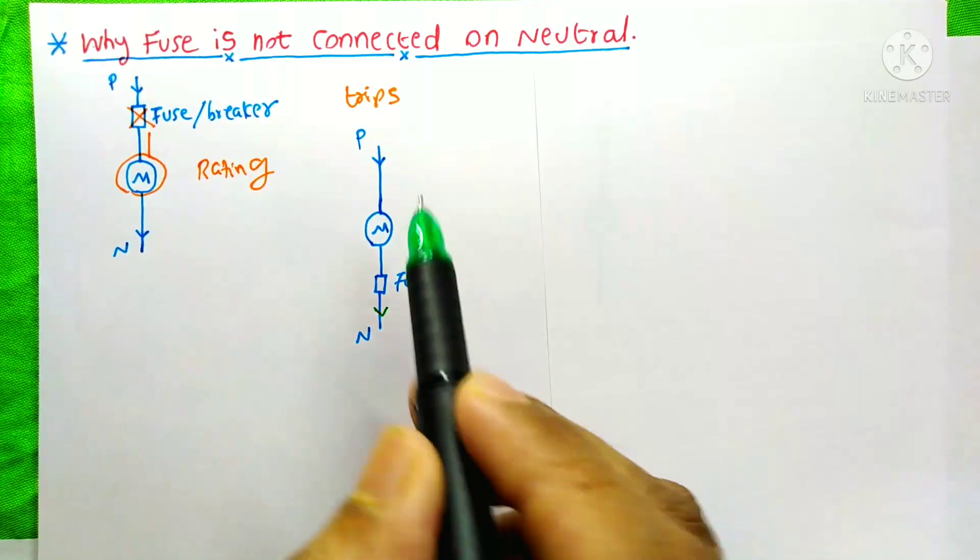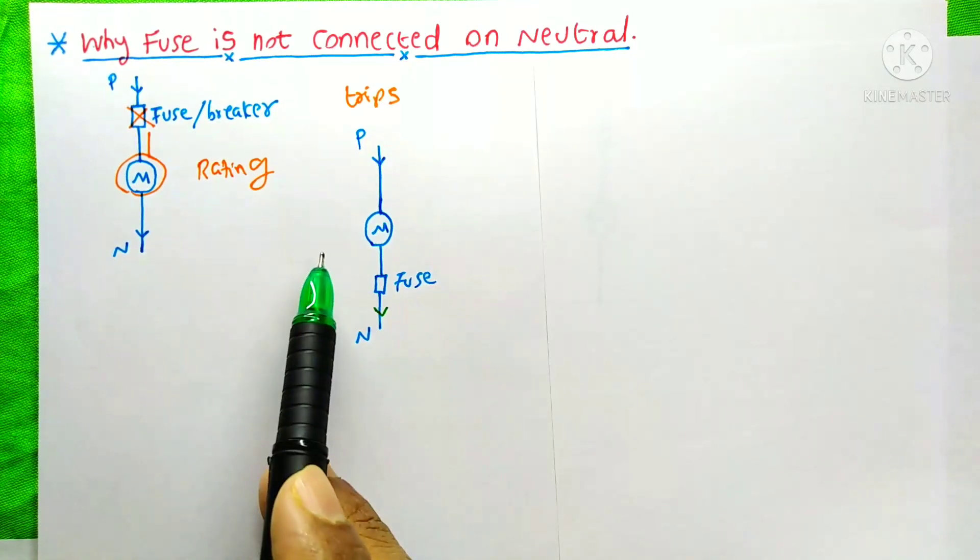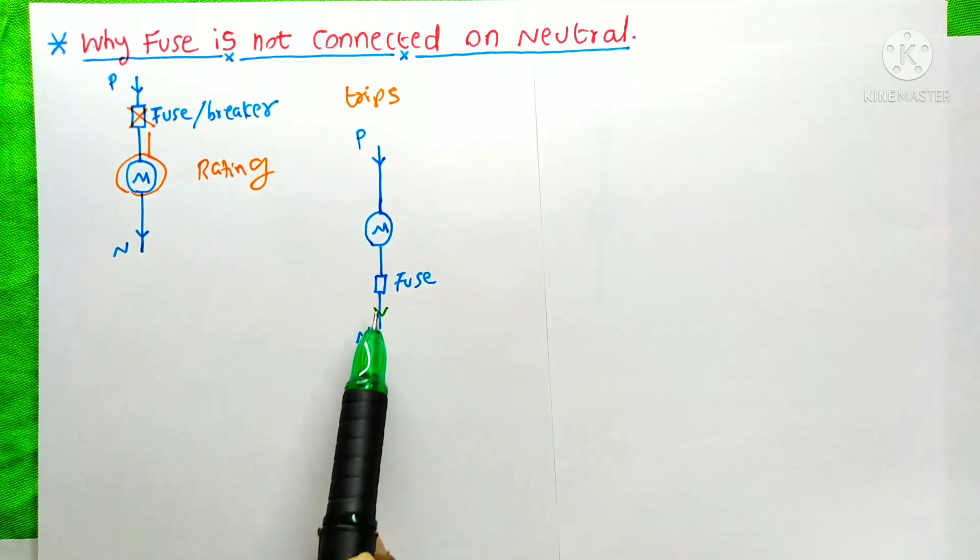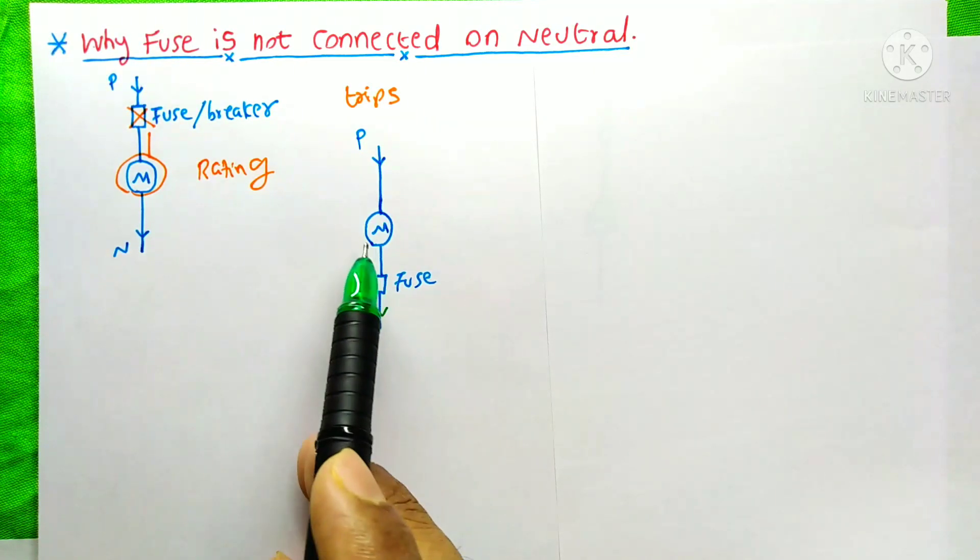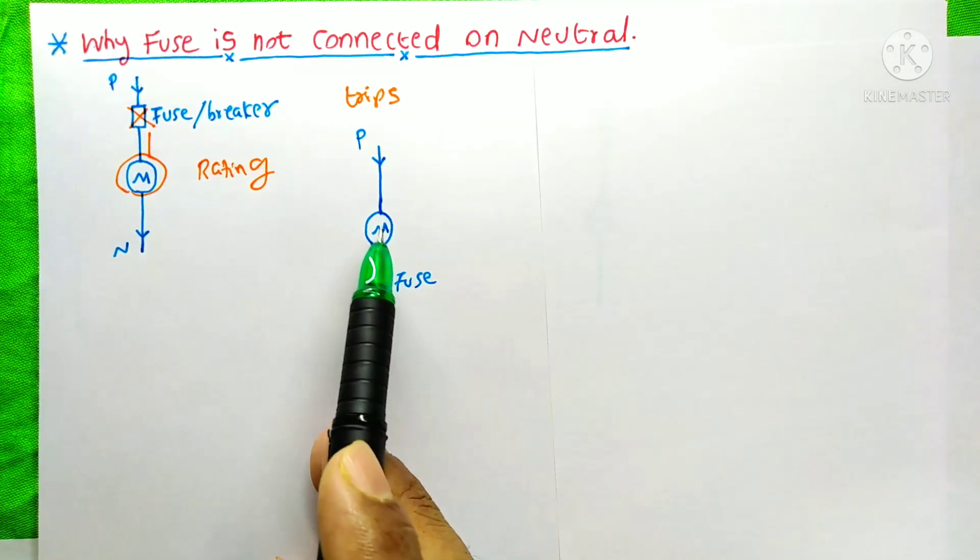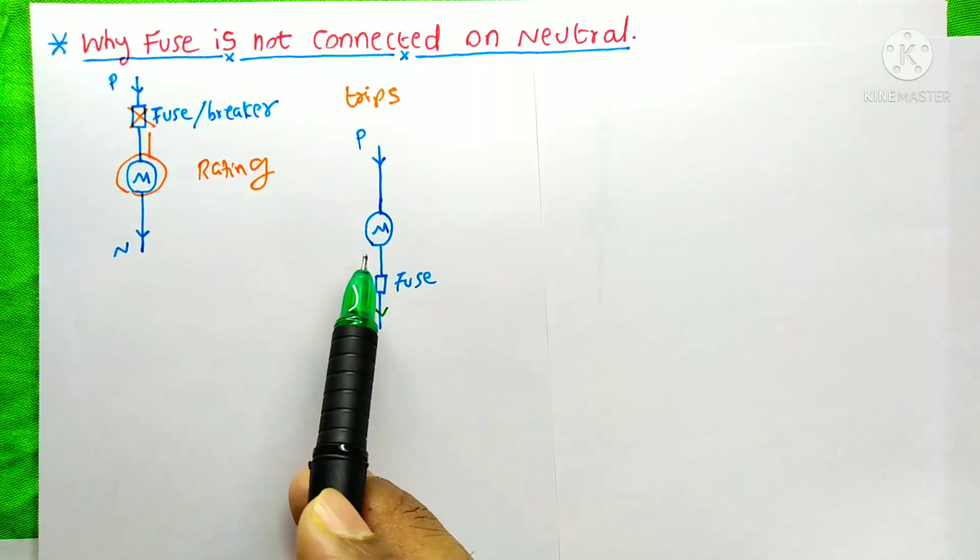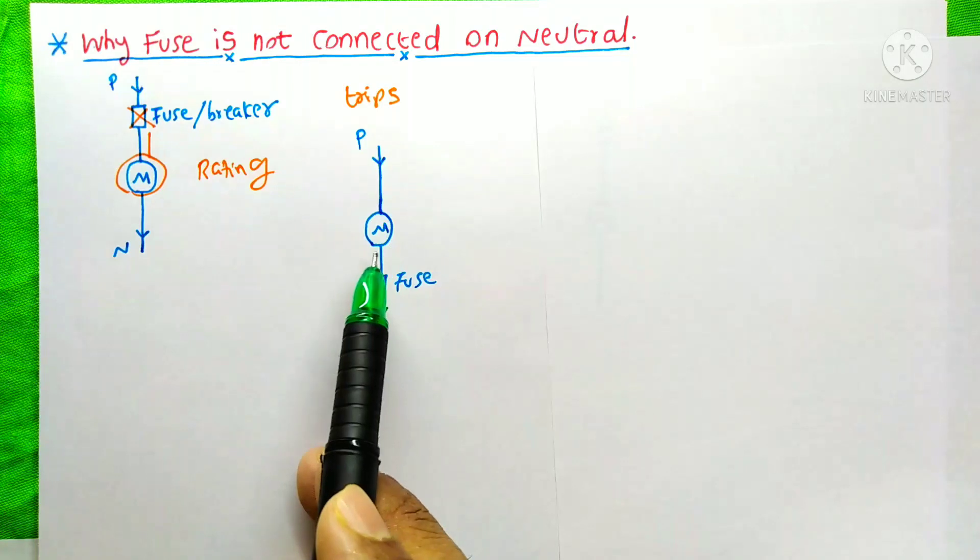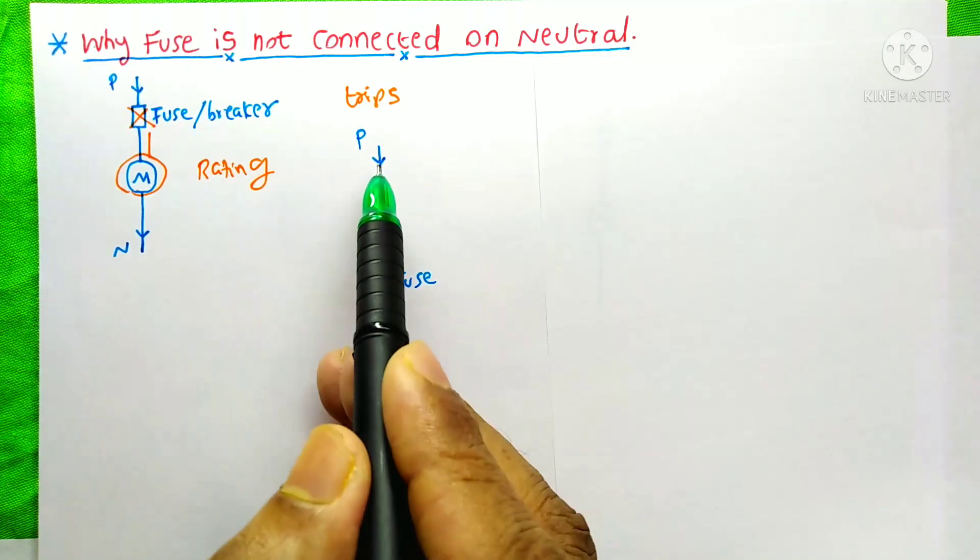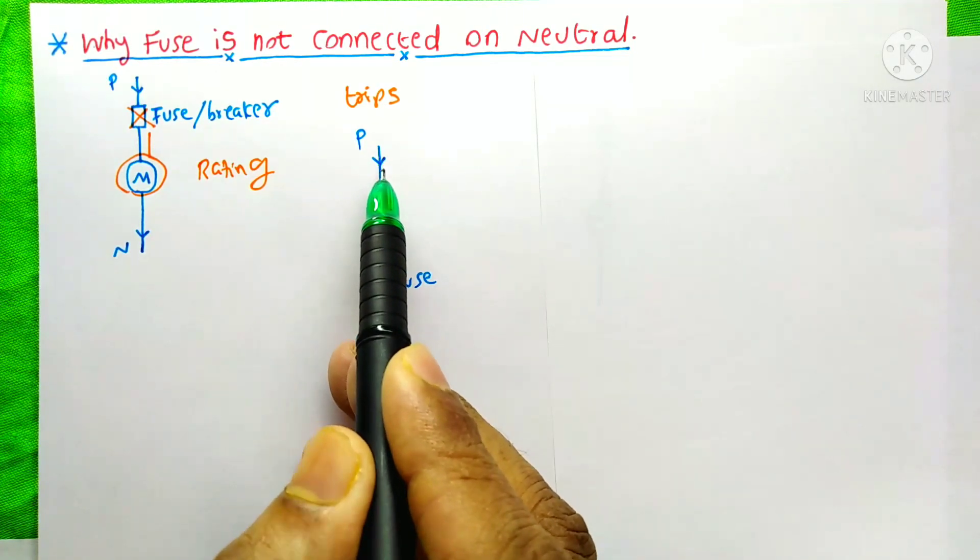And here is the second case. Here I connected the fuse on the neutral wire. So in this case, what will happen if this motor takes more current than its rating? At this time, obviously, this motor gets damaged because there is no fuse connected on this phase.